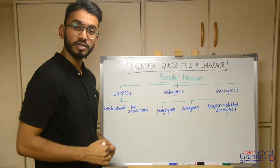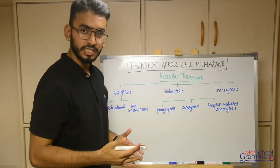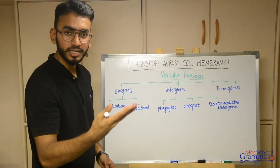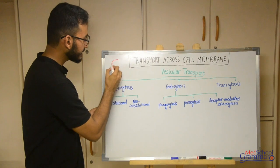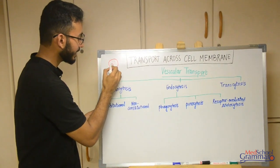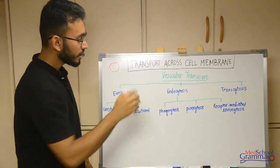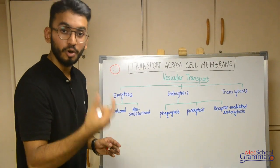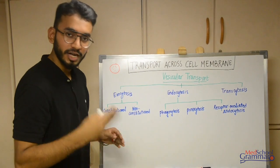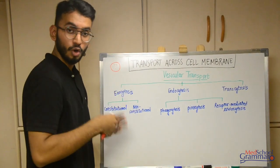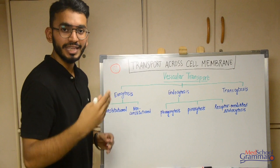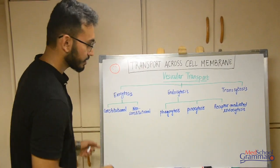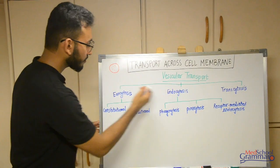Let's study about vesicular transport. Vesicular transport simply means transport of a vesicle. A vesicle is a membrane-bound structure containing certain substances. This specific mechanism is used for the transport of certain macromolecules which cannot be transported by simple diffusion, facilitated diffusion, or even active transport — they require this special mechanism in the form of vesicles.